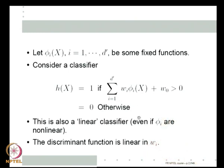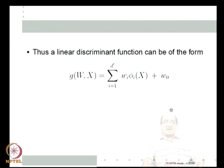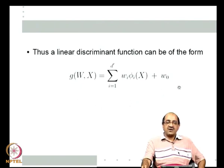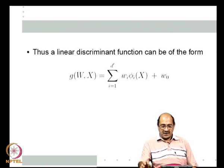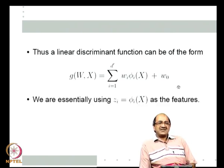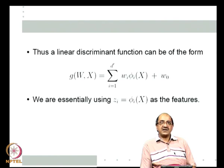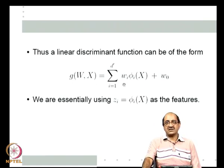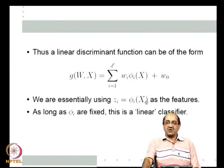A general linear discriminant function can be written as g(w, x) = Σ(i=1 to d') w_i φ_i(x) + w_0, where the φ_i's are some fixed functions. What this means is that instead of using x_i as the i-th feature, I am using z_i = φ_i(x). So the vector z = (z_1, z_2, ..., z_{d'}) is a new feature vector, and with respect to that it is the same as the old linear discriminant function. That is the reason why we still call all such things linear discriminant functions and the resulting classifier structures linear classifiers—as long as the φ's are fixed.